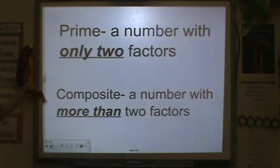Now, a prime number is a number with only two factors. A composite number is a number with more than two factors.